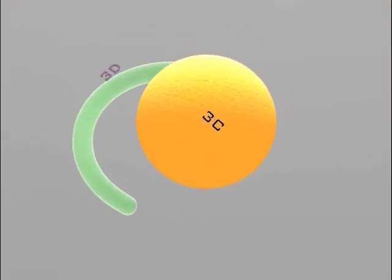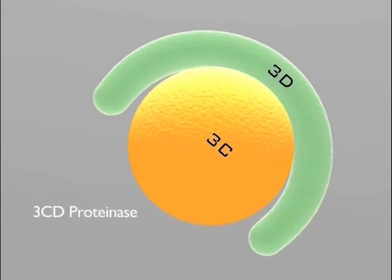Eventually, and at different stages, all the polyprotein products will be cleaved into individual proteins or protein precursors with various functions and properties. For example, 3C is a proteinase and 3D is the polymerase. But the two of them together also form the 3CD, which is a proteinase with different properties and essential for RNA synthesis.